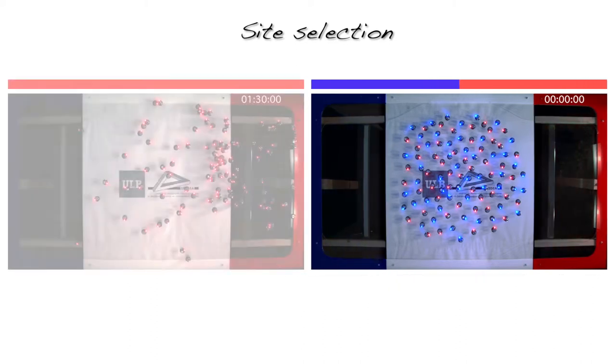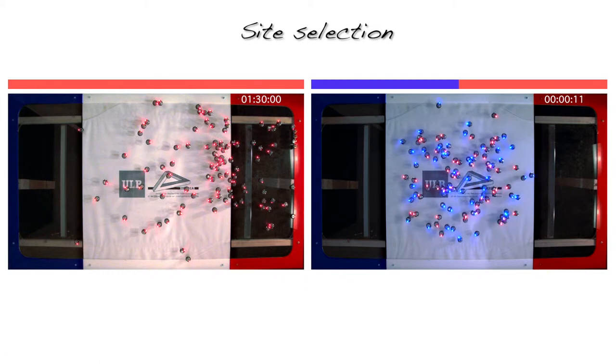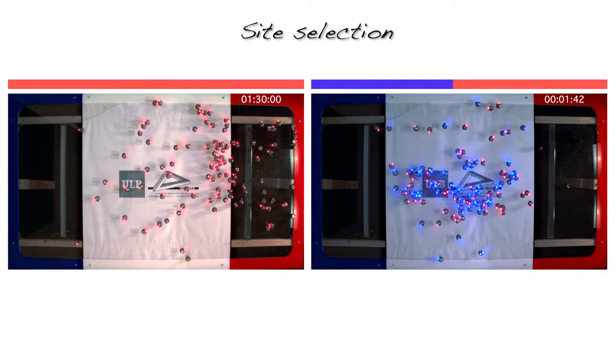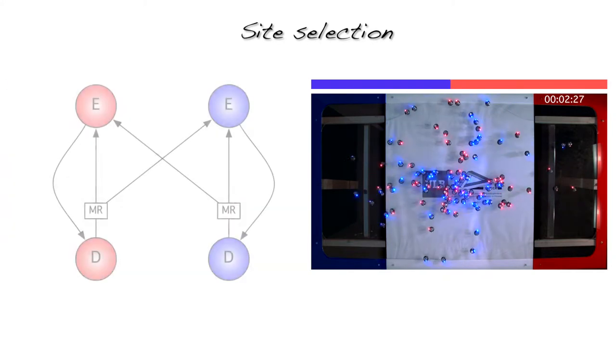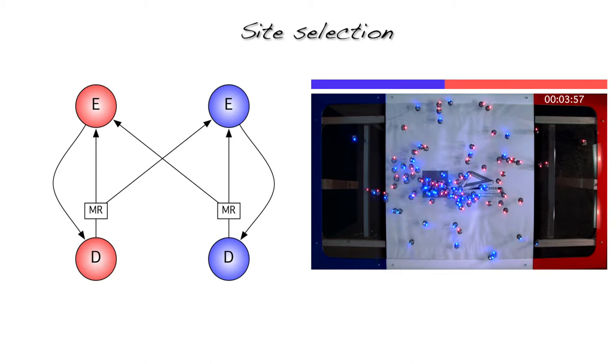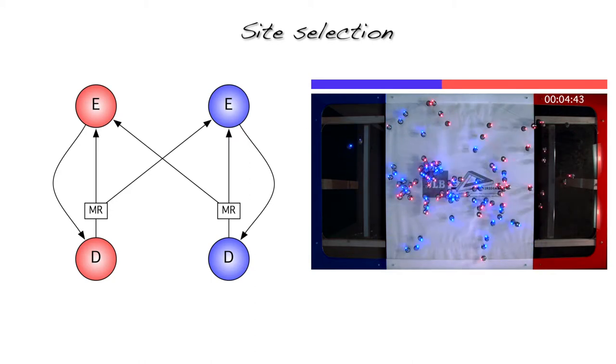A swarm has made a decision when, as a result of a decision-making strategy, a large majority of robots have the same preference. We control the Kilobot with a finite state machine that implements our decision-making strategy.